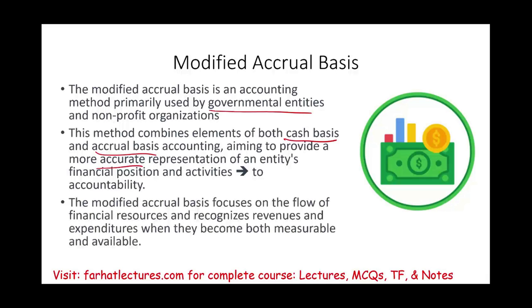The modified accrual basis focuses on the flow of financial resources and recognizes revenues and expenditures when they become measurable and available. What you care about is how well they are doing on a budgetary term — in the short term — because you want to hold them accountable. For example, a company like Amazon took 10 years until they became profitable, and investors are okay with that because they are looking for long-term investments. But when you judge a government entity, you don't care about 10 years or even three years — your concern as a citizen is to hold them accountable now. Therefore you need a different accounting measurement: modified accrual.